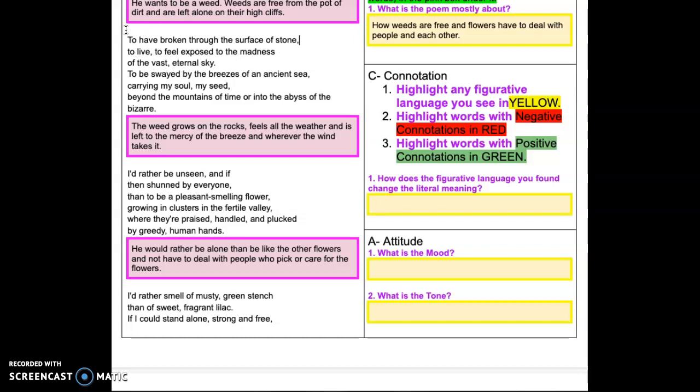So feel exposed to the madness of the vast eternal sky. Again, he's just continuing with that imagery. But instead of just saying being exposed to the weather, he's saying of the madness. So we have more figurative language there where he's comparing the weather to that state of being crazy and unpredictable, to be swayed by the breeze of an ancient sea, carrying my soul, my seed beyond the mountains of time into the abyss of the bizarre.